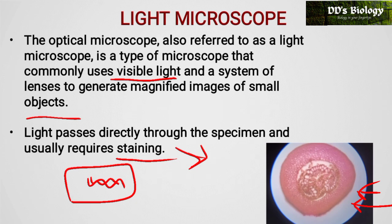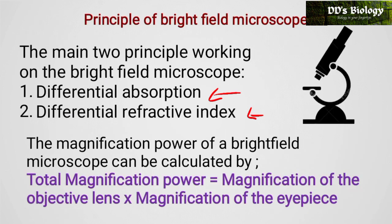The stained areas appear dark against the bright background due to differential absorption. When staining is used, the specimen absorbs light, making the whole specimen appear dark compared to the surrounding bright background.